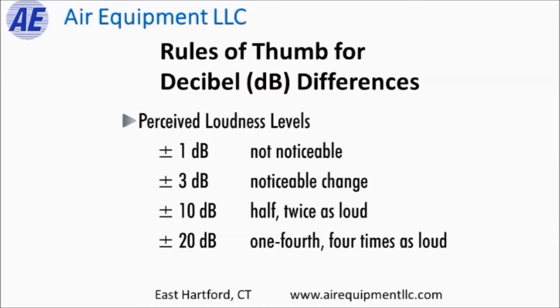If there's a difference of plus or minus 10 dB, that is either twice as loud or half as loud. The decibel scale is logarithmic, designed so that every 10 decibels the noise level doubles. So plus or minus 20 dB would be four times as loud, or one-fourth as loud. This is why, if the noise level in a space is 70 dB and we reduce it by just 10, going from 70 to 60 actually reduces the noise level in half.